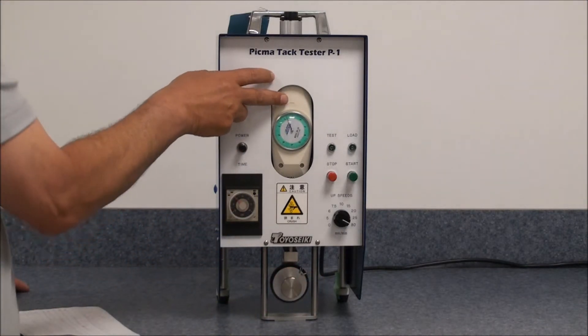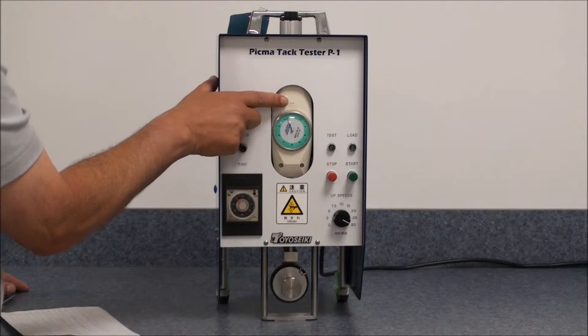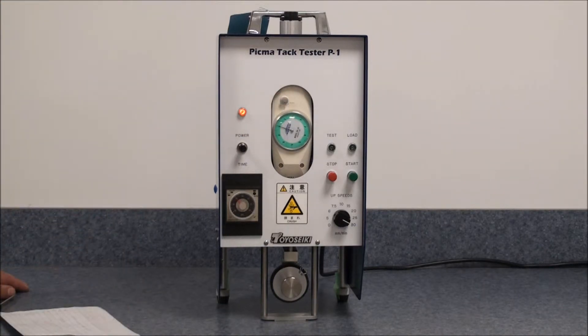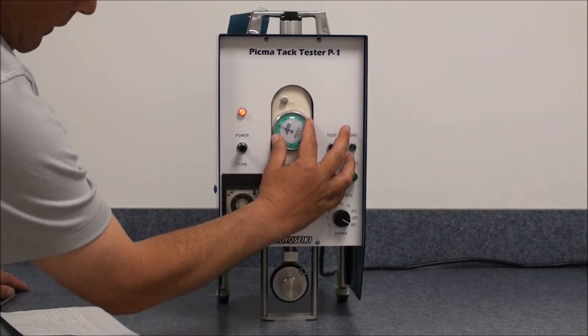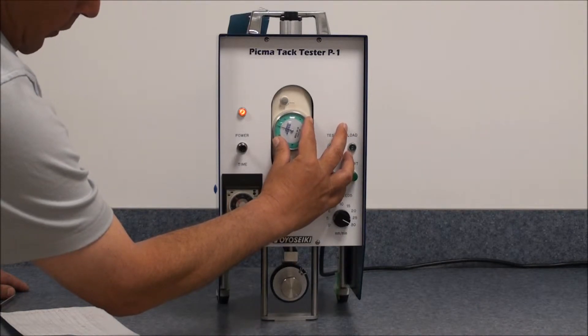Make sure the dial indicator is set to zero by pushing the little button. You can make adjustments, if needed, to line up the zero perfectly.